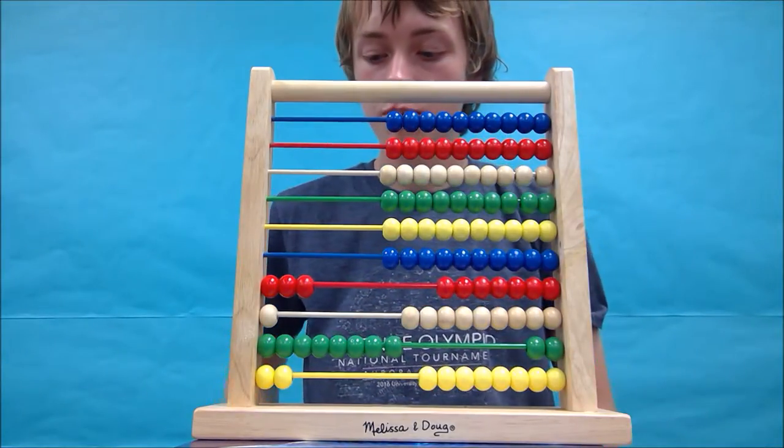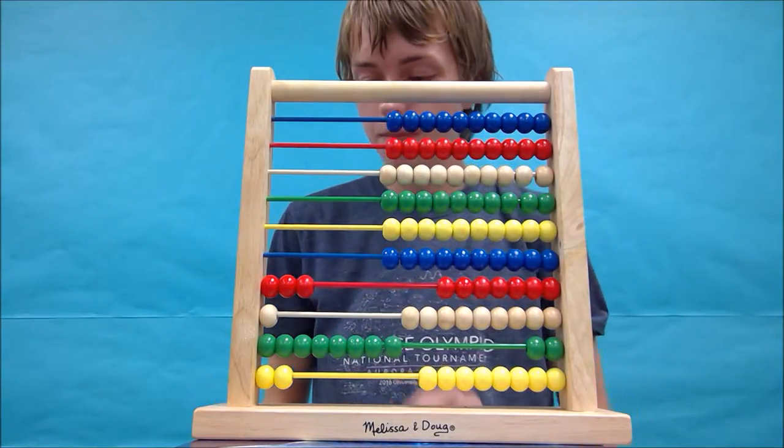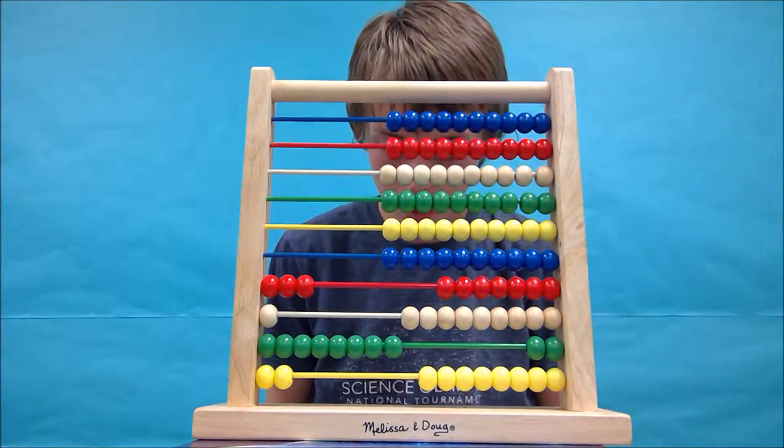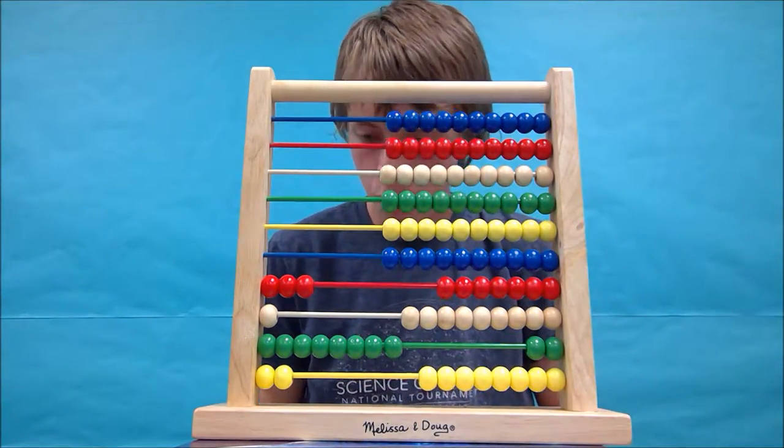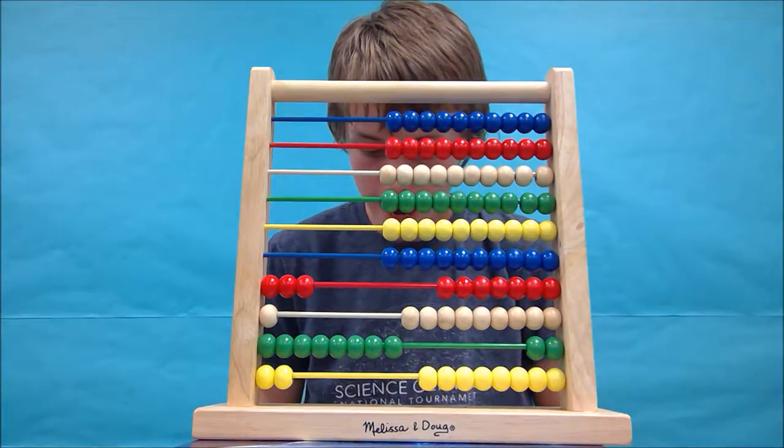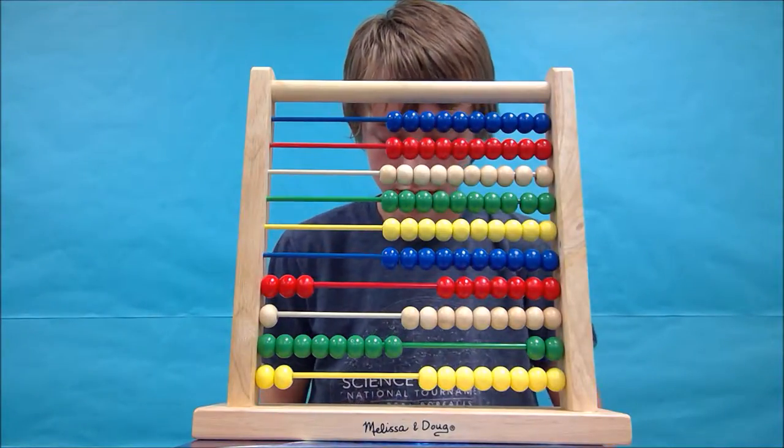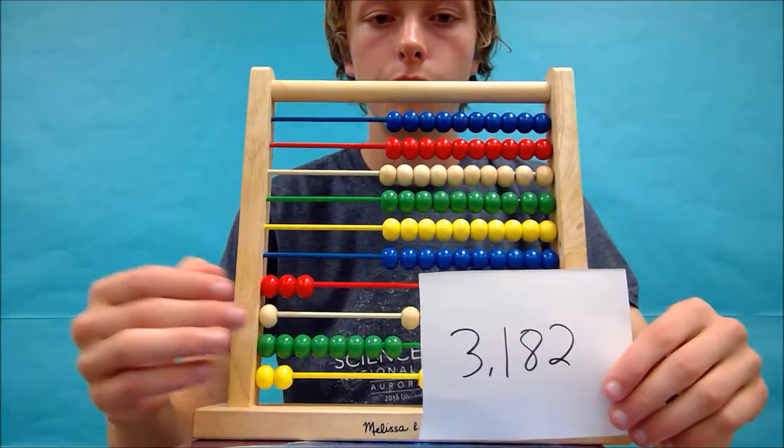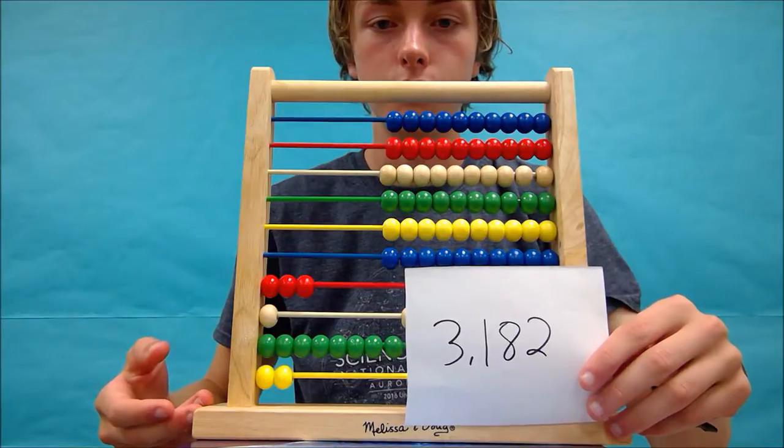We can get a sheet of paper ready to write down our answer. So we can start at the top going down and write a 3, followed by a 1, 8, and then a 2. So that gives us an answer of 3,182. Our abacus should look like this after we have solved the equation.